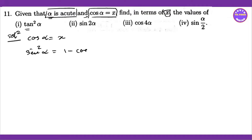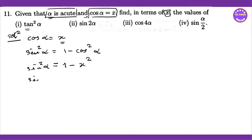Using the cos squared alpha formula: cos alpha equals x, so cos squared alpha equals x squared. Therefore sin squared alpha equals one minus x squared, and sin alpha equals plus or minus square root of one minus x squared.